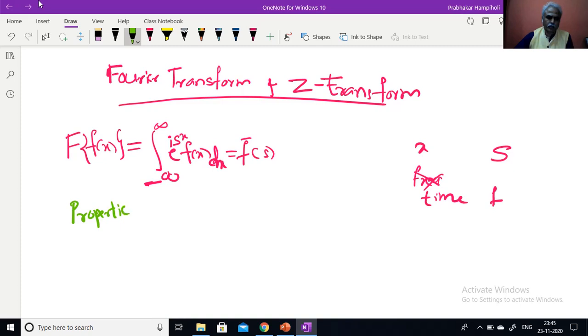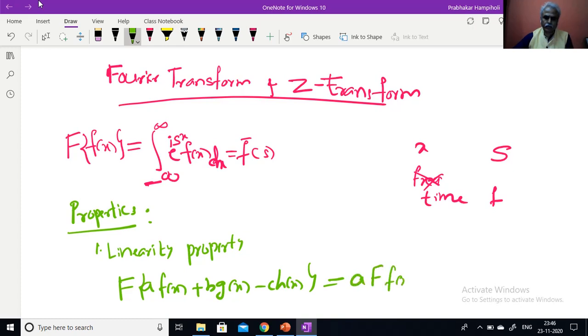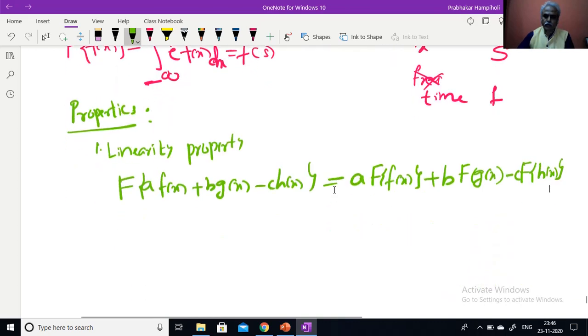Because of these properties, Fourier Transforms has got very well structured domain. First one is linearity property. Just like derivatives and integrations, it has got linearity property. Fourier Transform of a·f₁(x) + b·f₂(x) - c·f₃(x) is equivalent to a·F{f₁(x)} + b·F{f₂(x)} - c·F{f₃(x)}. This is known as linearity property.